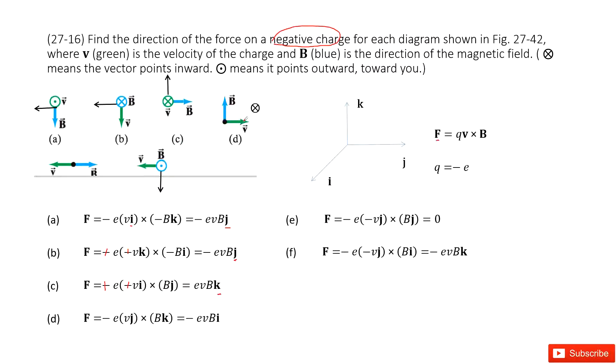And the next one, for this case, we can see the V direction is in the J direction. The B direction is in the K direction. So J cross K and the negative side, so it becomes negative I direction. Negative I direction pointing inward.